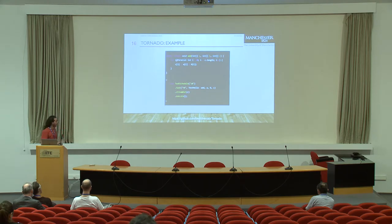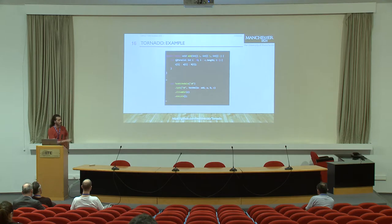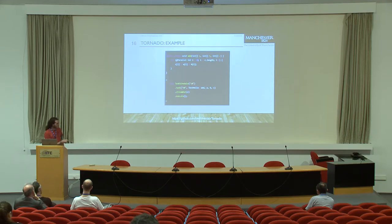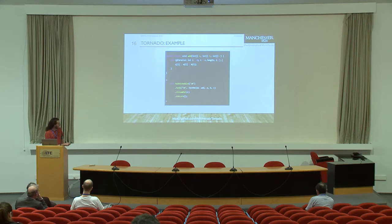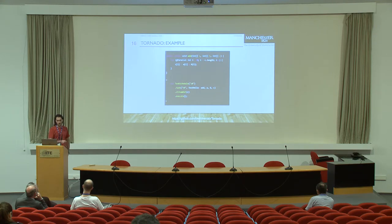Here we see an example of a code segment written in Tornado. We have a vector addition, and we annotate the for loop with the parallel annotation — a hint to the Tornado compiler that this loop can be executed on a hardware accelerator. We then define a task schedule, give it a name, add a task named T0 that uses the add function, and specify that we want to stream out C — the output argument — to bring it back to the host after computation. Finally, we invoke execute to run the task schedule.